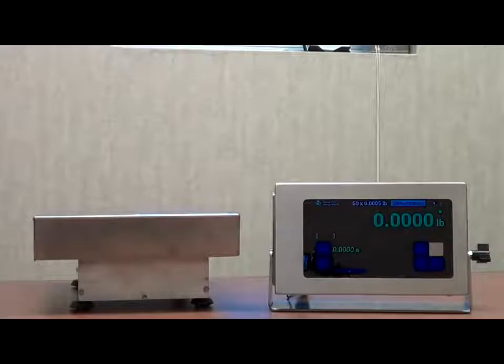This particular scale is a surface acoustic wave scale, or in short, SAW scale. This technology can show one part in 100,000. This is a 50 pound scale, but it can show up to four decimals due to its resolution.